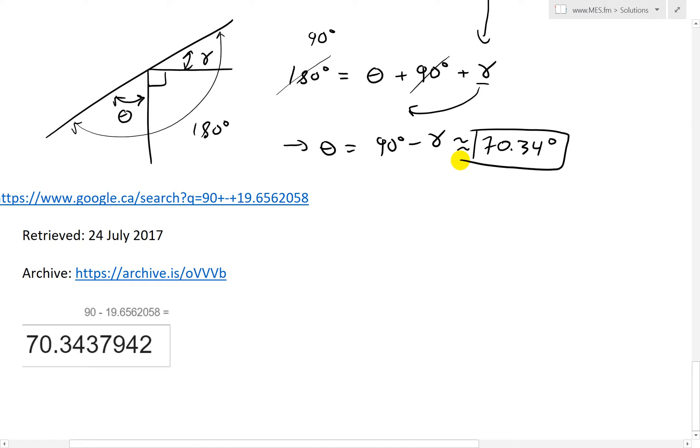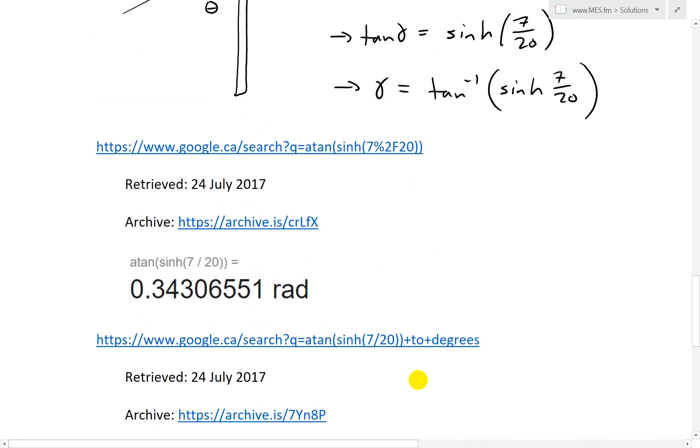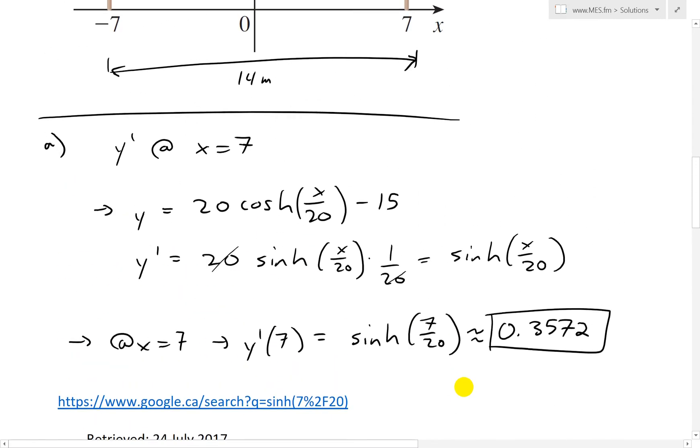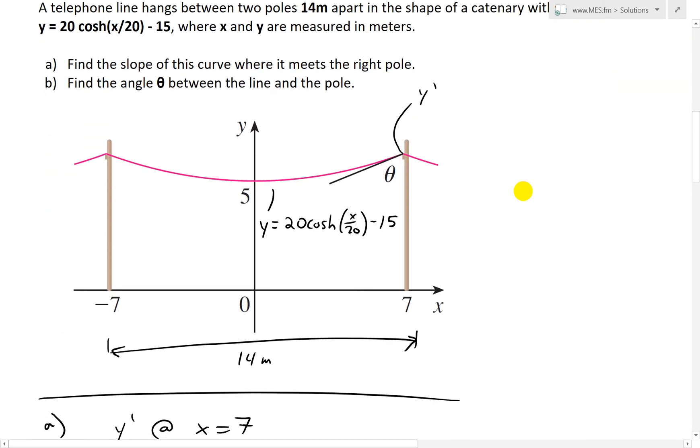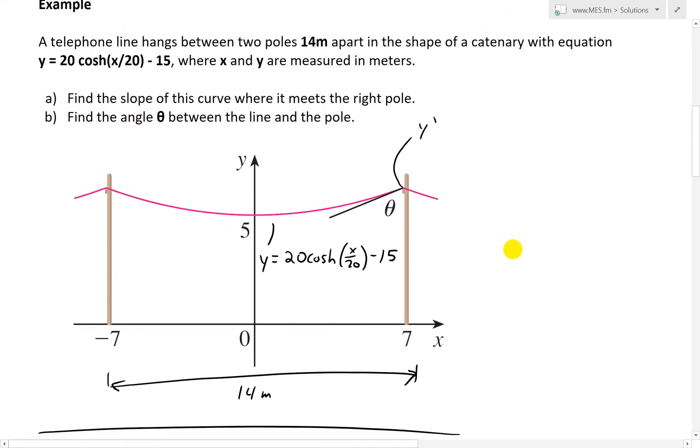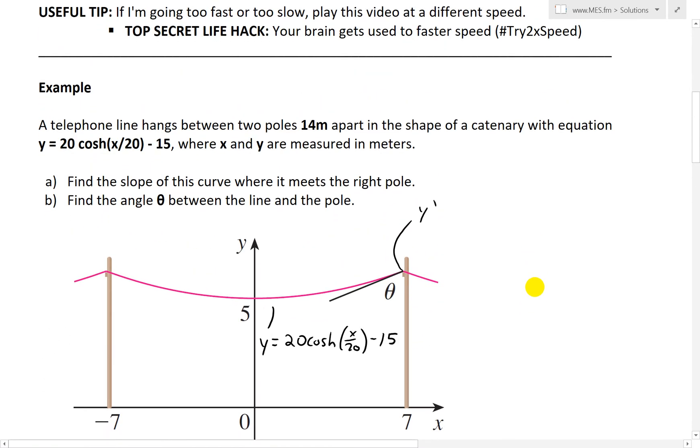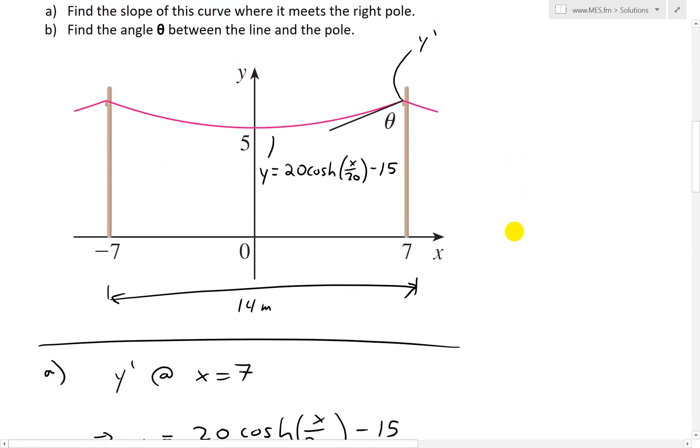And there is our answer for the angle between the right pole and the catenary curve or line or cable, telephone cable. So anyways, that's all for the day. Hopefully you'll learn from this pretty interesting example on how to solve the slope and angles between a catenary and a pole. And this kind of stuff is actually used in engineering when they're designing cables that hang like this for bridges or even just telephone lines like this. Anyways, that is all for today.